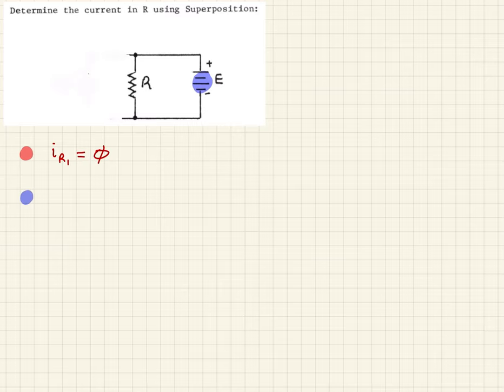So that means this is what we're left with. This is just an application of Ohm's law. So now the current flowing through here, we'll call it IR2, which is going to be Ohm's law, which is V over R. So in this case it's going to be E over R.